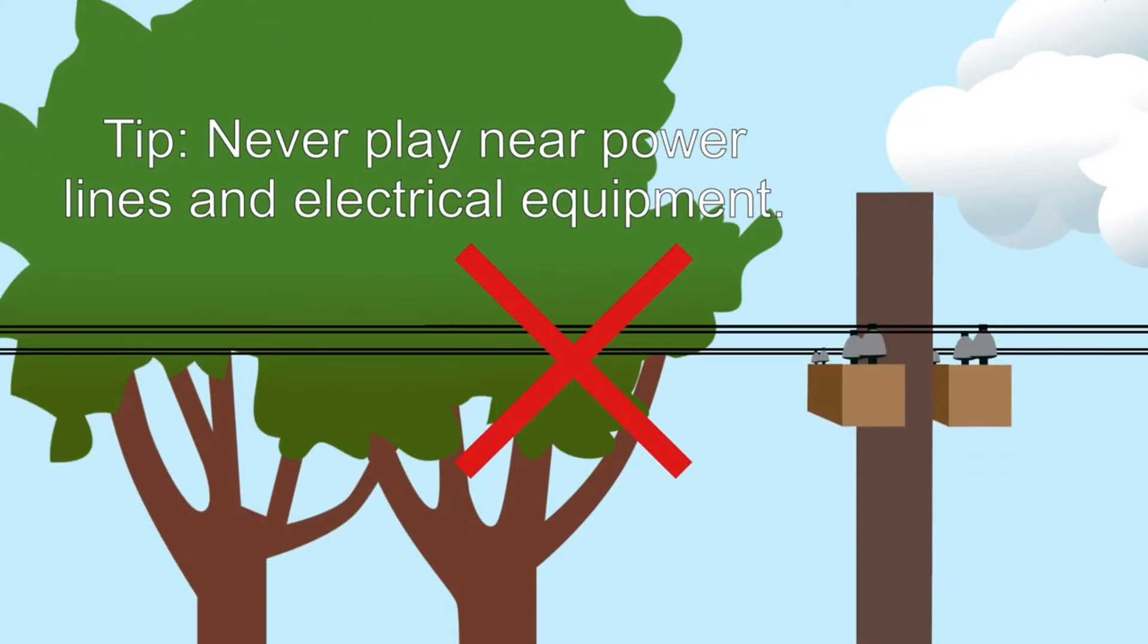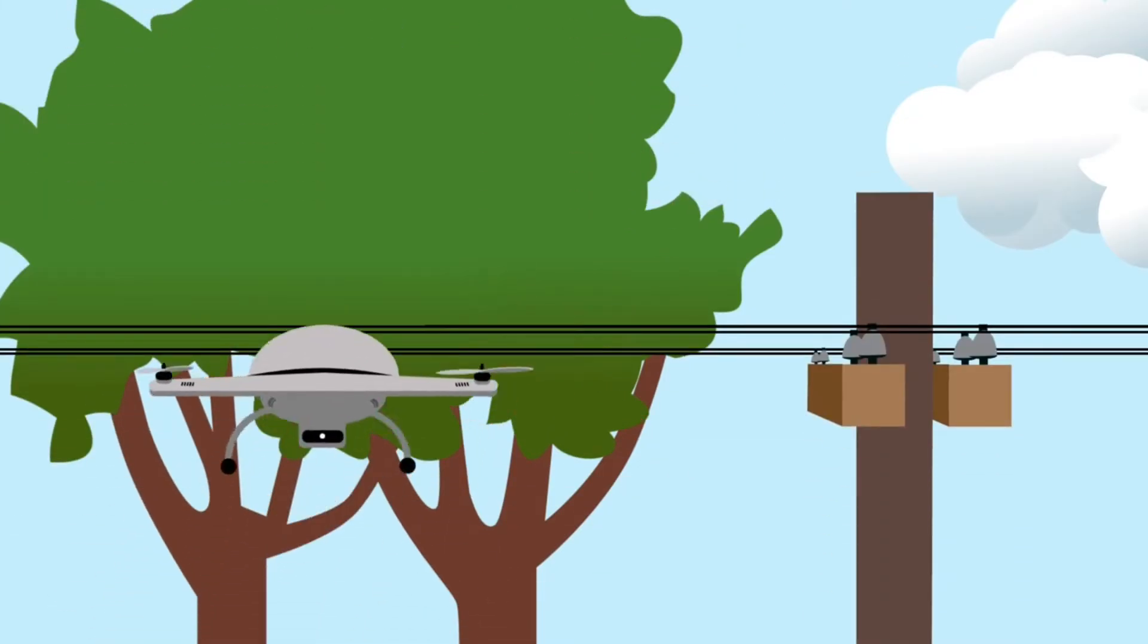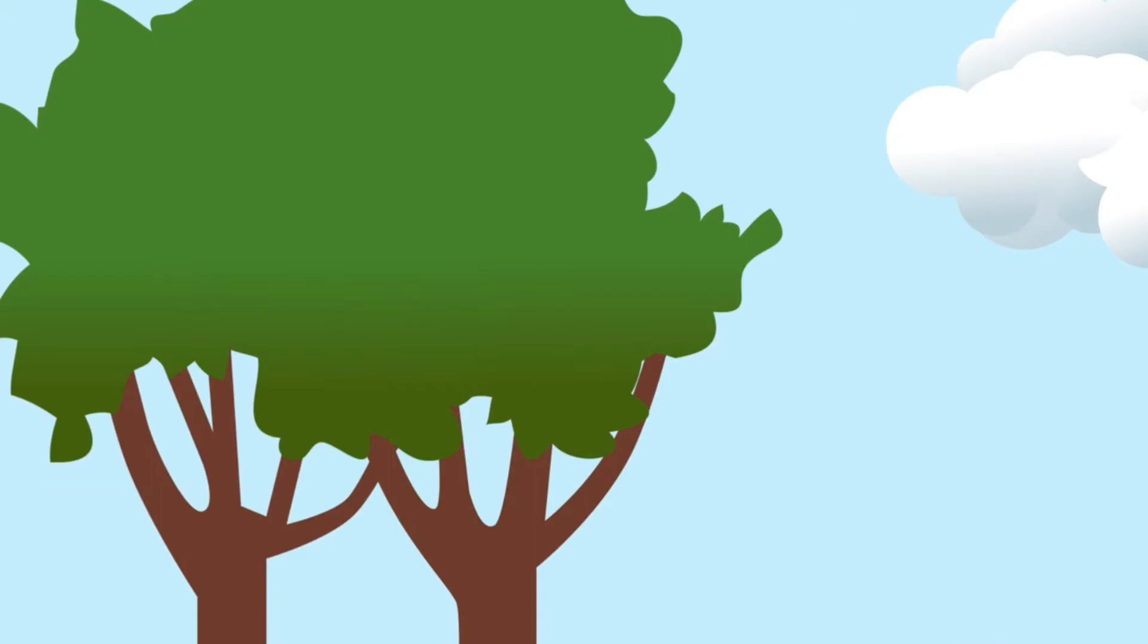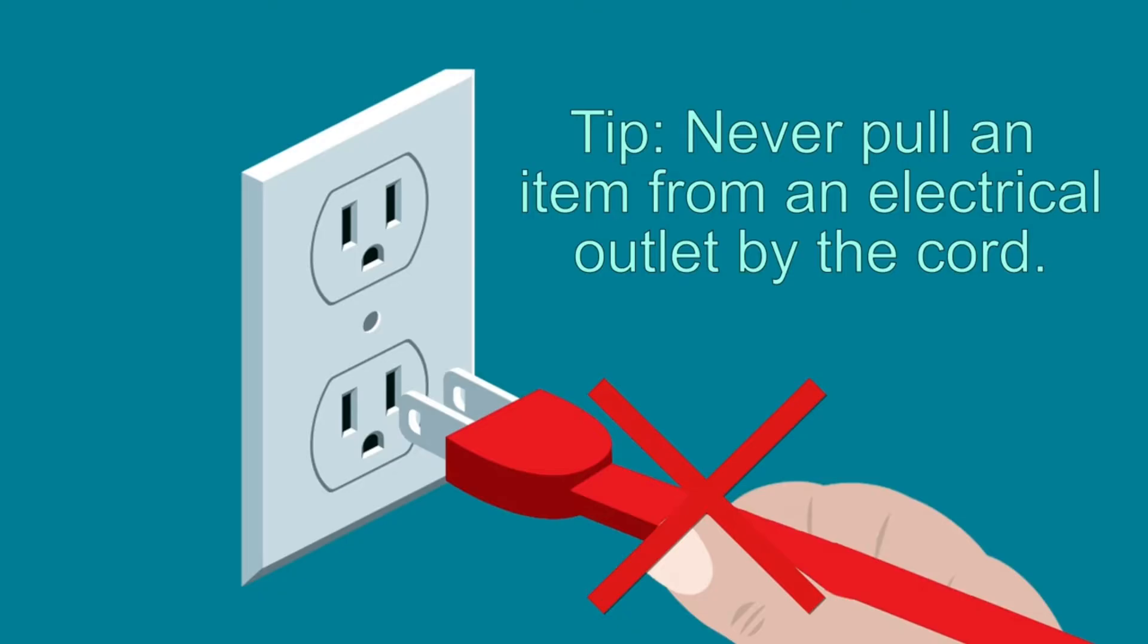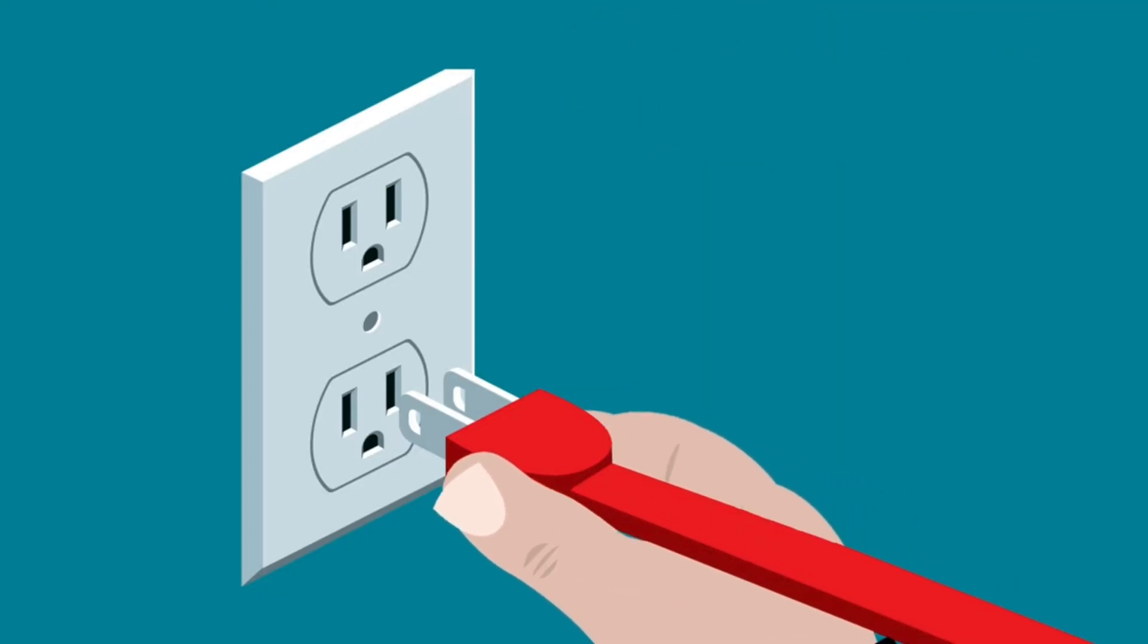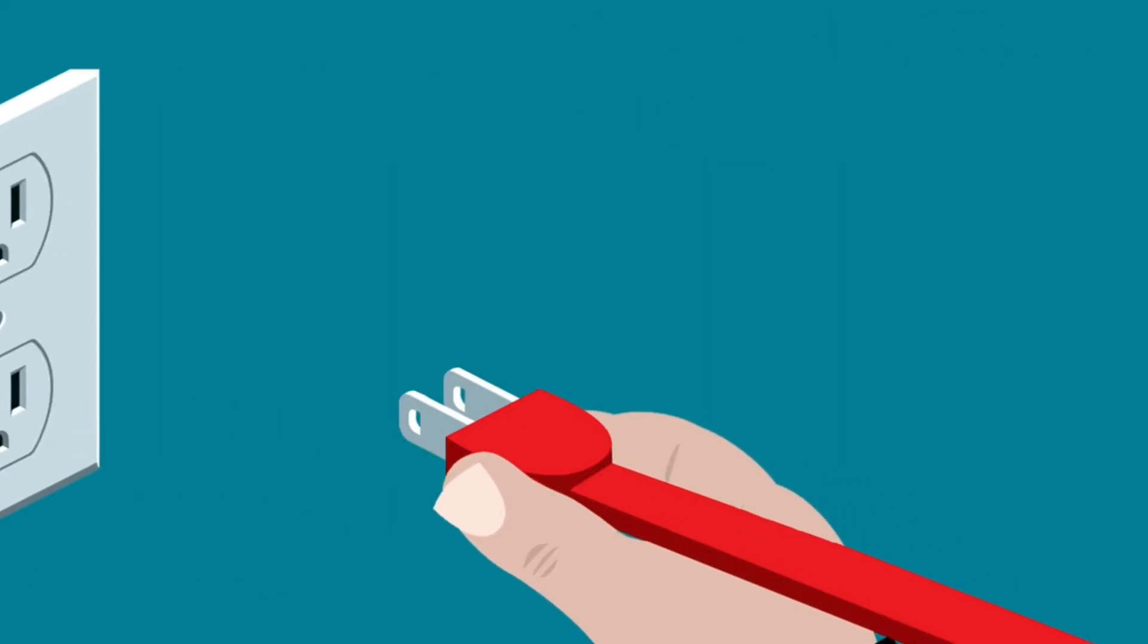Never climb trees near power lines and electrical equipment. Same goes for kites and drones. Before you fly them, make sure you're far away from any overhead power lines. Never pull a plug from an electrical outlet by its cord. Pull from the plug to avoid potential shock, or ask an adult to help you.